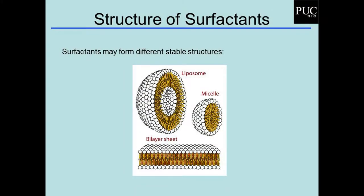Surfactantes podem formar diferentes estruturas estáveis. Pode formar um lipossoma, que é como uma micela, mas com duas camadas de surfactante em vez de uma. Além disso, essa estrutura tridimensional também pode ser formada numa estrutura bidimensional, que seria a bicamada fosfolipídica, muito conhecida como constituinte da membrana celular. Essas três estruturas são bastante conhecidas.